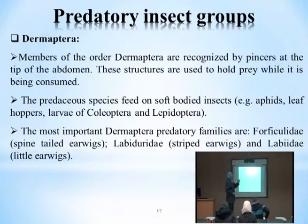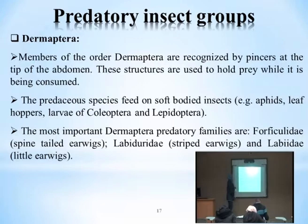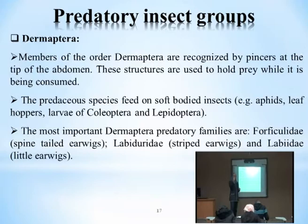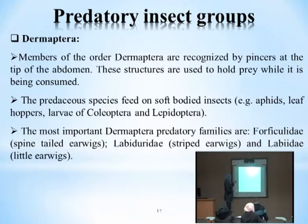Dermaptera — earwigs — are recognized by the pincers at the tip of the abdomen, used to hold prey while it is being consumed. They prey primarily on soft-bodied insects like aphids, leafhoppers, and larvae of Coleoptera and Lepidoptera. The most important species is the spintailed earwig.